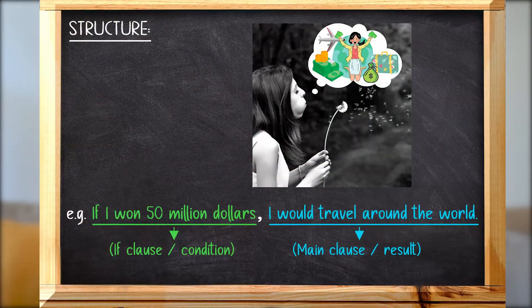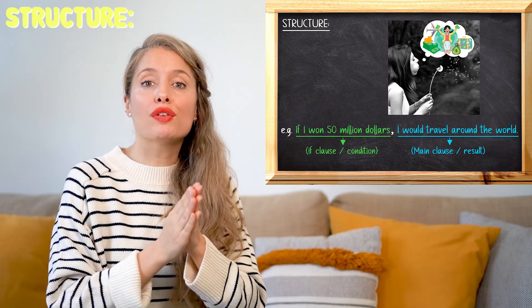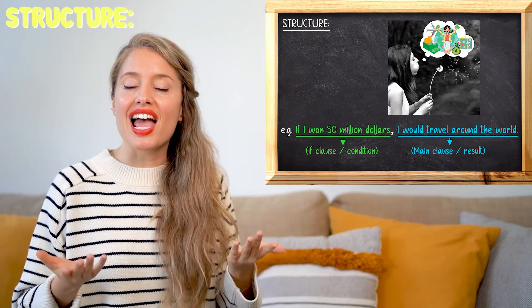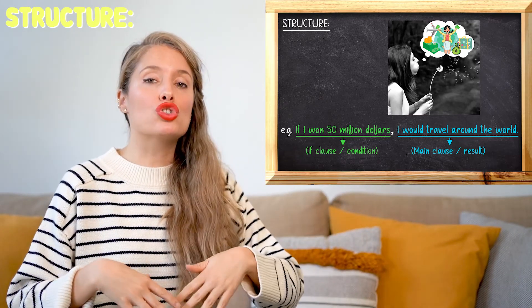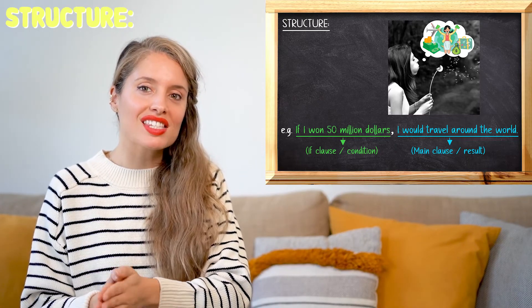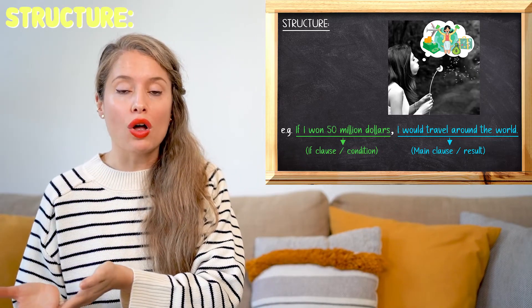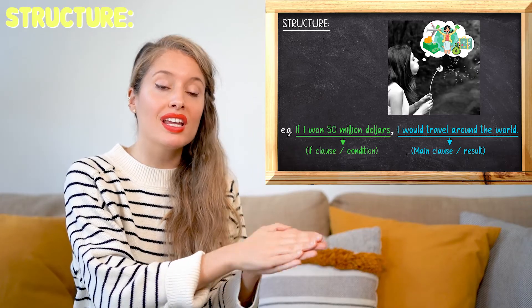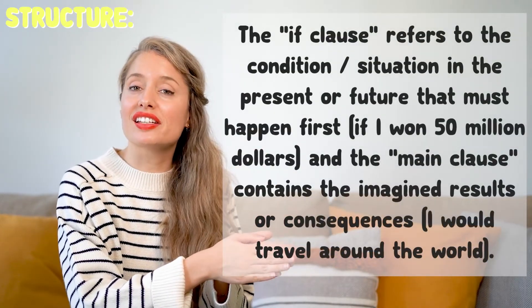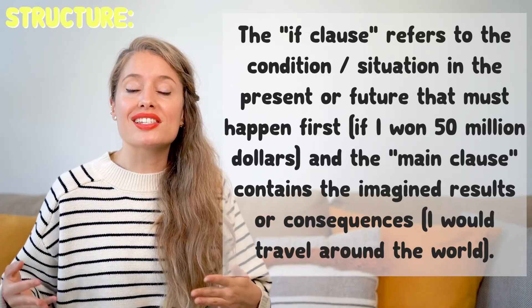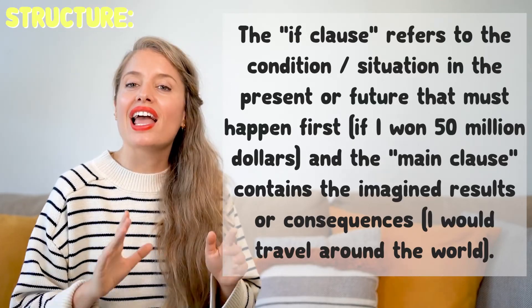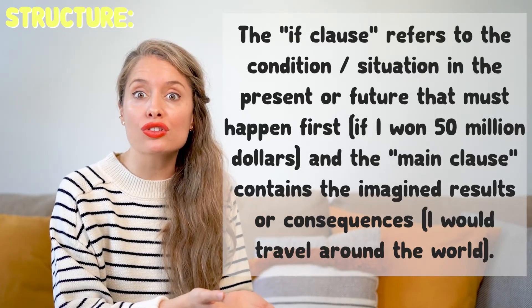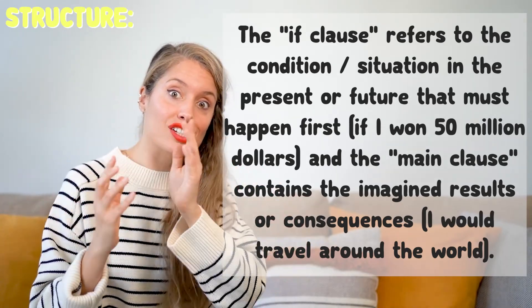Let's go back to the sentence from the beginning: 'If I won 50 million dollars, I would travel around the world.' Here, 'If I won 50 million dollars' is the IF clause — this is the condition. 'I would travel around the world' is the main clause — this is the result. The result depends on the condition; the condition must happen first for the result to also happen.